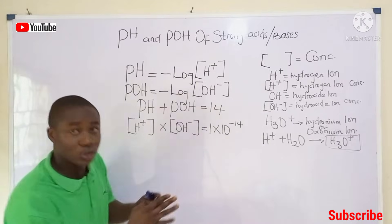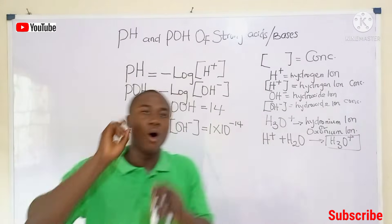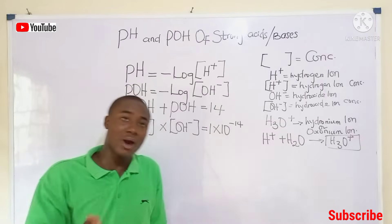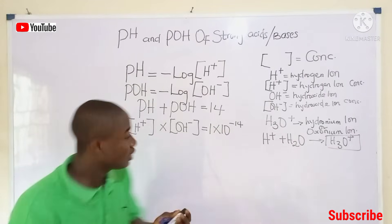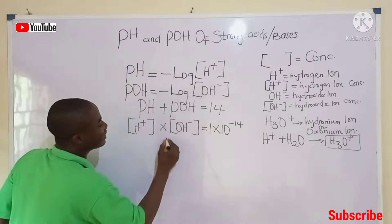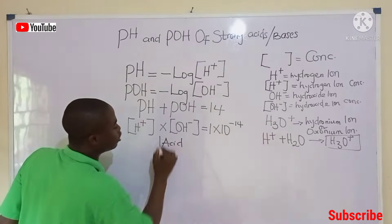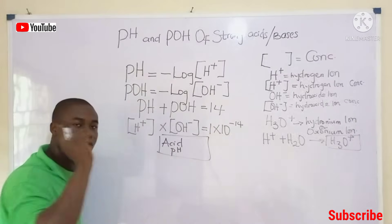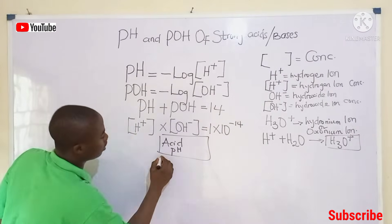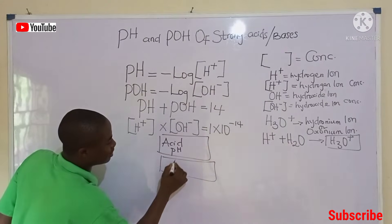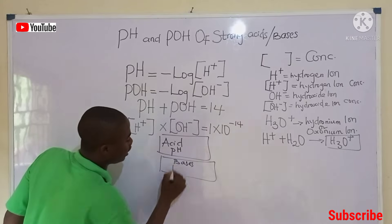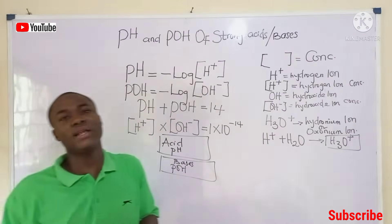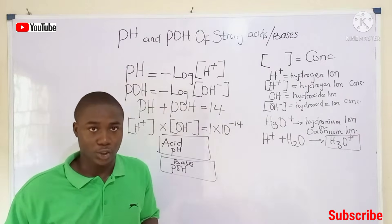With these four equations, we can solve problems on pH and pOH of strong acids and bases. It should be noted that acids relate to pH, while bases relate to pOH. Now let's move over to the questions.